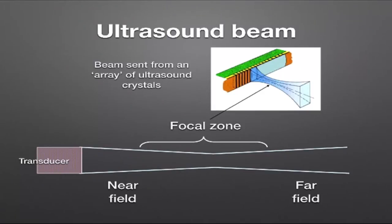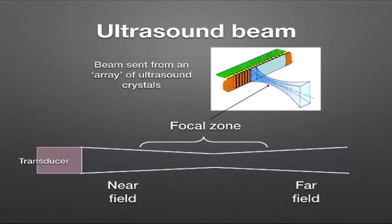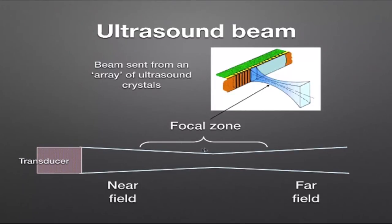The ultrasound beam is made up from a collection of crystals called an array — hence the terms phased array or curvilinear array for different probe types. Drawing a schematic of the beam gives a three-dimensional structure with a near field, a far field, and most importantly a focal zone. In the focal zone, resolution is at its best — this is where the maximum power of the ultrasound beam is.